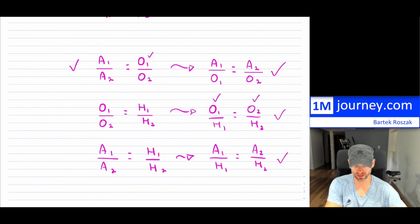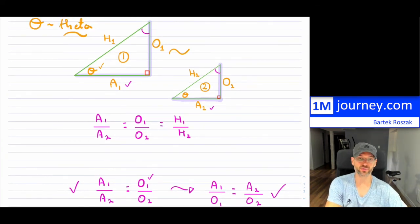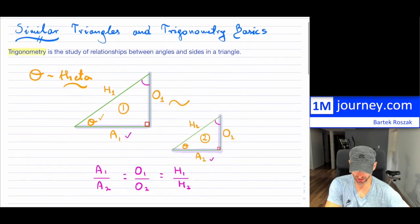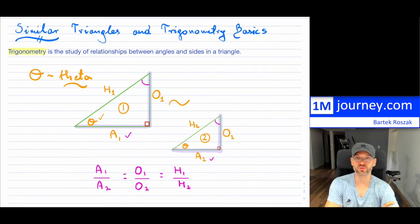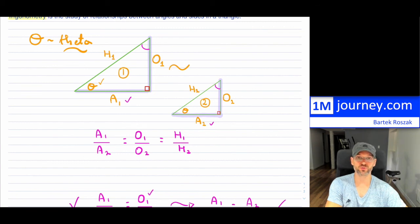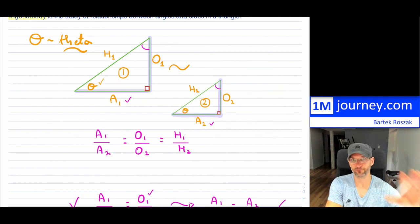I am assuming we are working with a 90-degree right triangle throughout. That's all I wanted to introduce in this video in terms of similar triangles and trigonometry basics. Opposite, adjacent, and hypotenuse — depending on your angle, these are going to play a very crucial role, and we're going to be defining these things slowly as we go along. Thanks for watching — we'll see you in a future video.